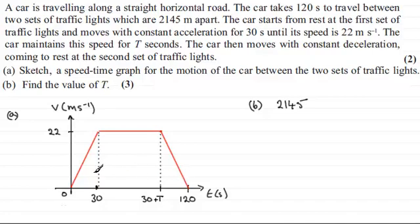We can see that 2145 is the area bounded by this graph. We can do this either by working out the areas of each of the triangles and the rectangle here and adding them together, or you could use the quick method, which is to work out the area of a trapezium, because this is a trapezium. That's what I'm going to do.